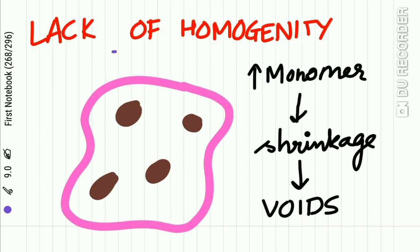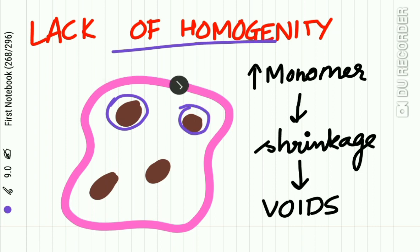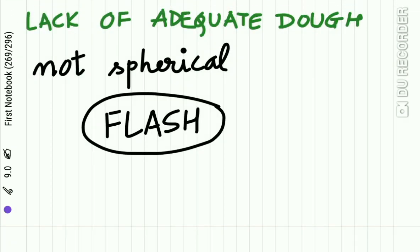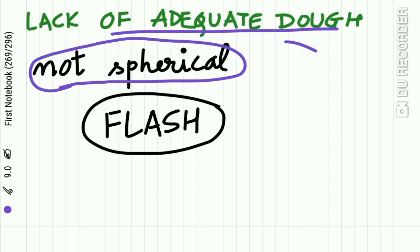If the dough is not homogeneous, certain areas contain more monomer than adjacent areas. The portion of the dough containing more monomer will shrink more compared to the adjacent area, and this localized shrinkage results in void formation. Also, if a very little amount of dough is taken during processing, external porosity may occur. The shape of this external porosity may not be spherical — it may be irregular.